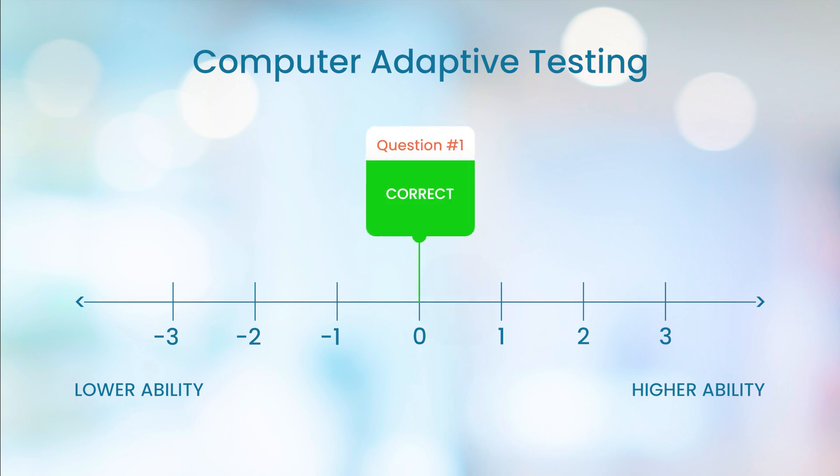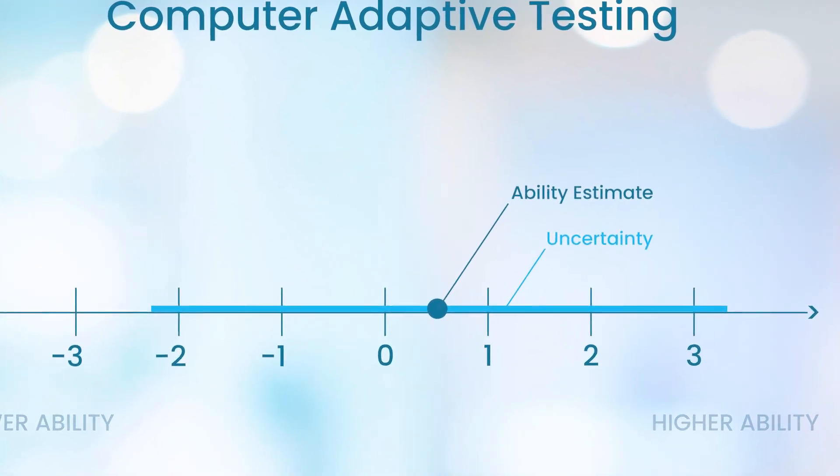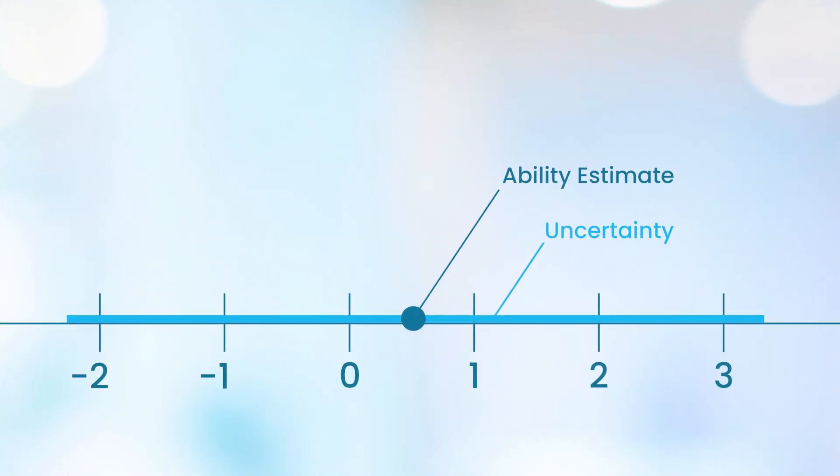Suppose the candidate responds correctly, then the CAT algorithm estimates an ability greater than 0, but places a lot of uncertainty around the estimate because there's only been one question. On the graph, we might show this as a dot around 0.5 to mark our estimate, but a very wide interval to acknowledge the uncertainty of the estimate.